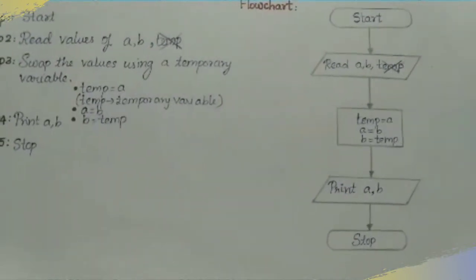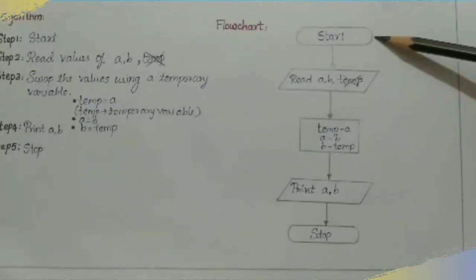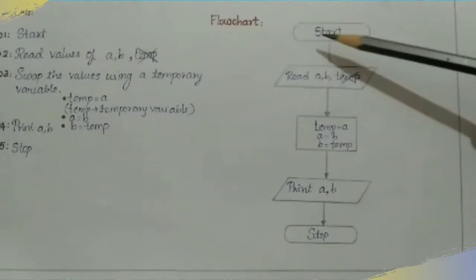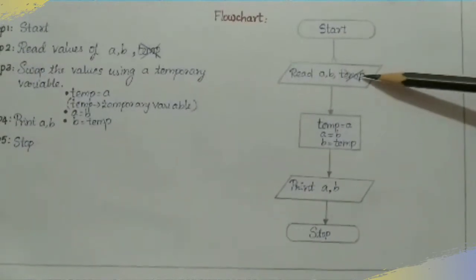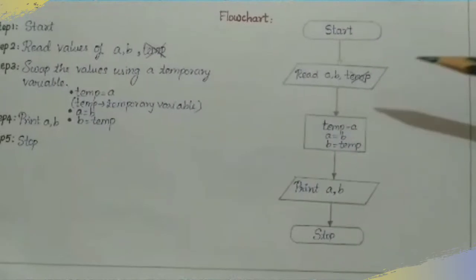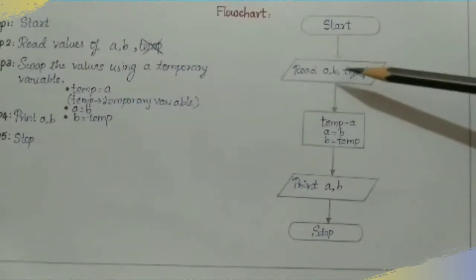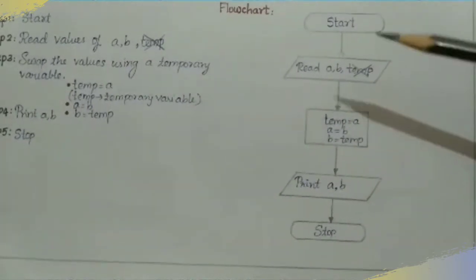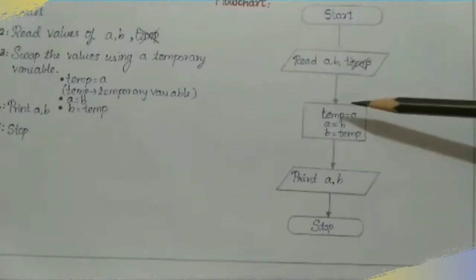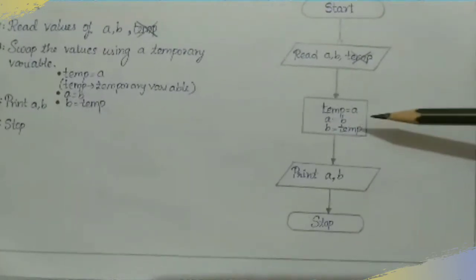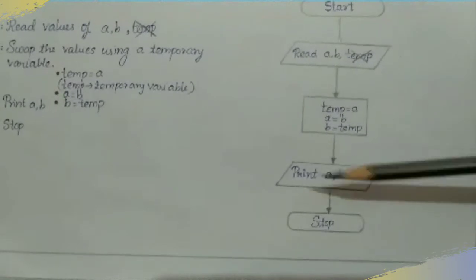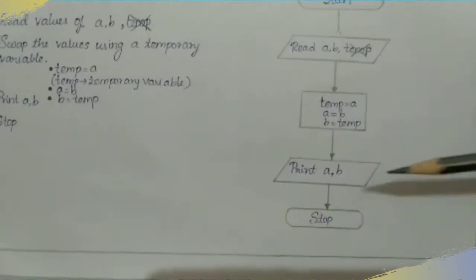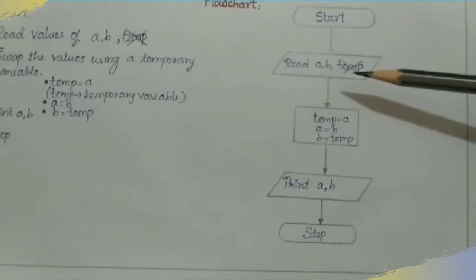This is the flowchart. The first step is Start and the last is Stop — these are terminal symbols represented by an oval shape. Next, input and output use a parallelogram symbol, so we write 'Read A, B' in a parallelogram. The process steps — temp equals A, A equals B, B equals temp — use a rectangular process symbol. Finally, 'Print A, B' uses a parallelogram for output.